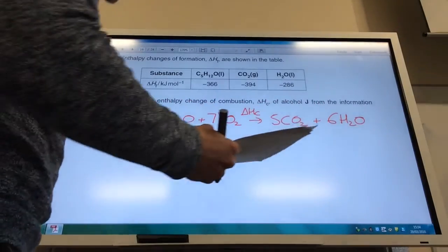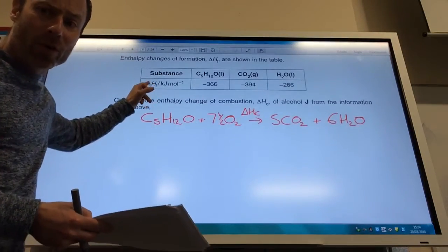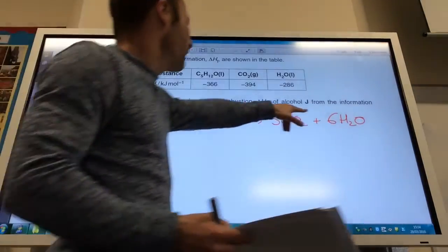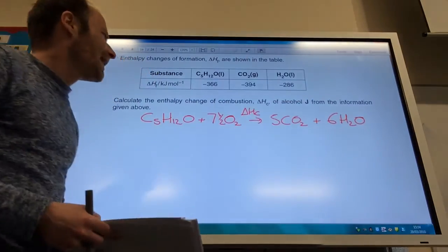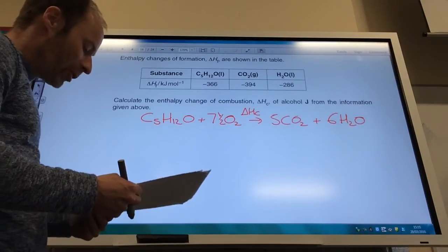Okay, Hess cycle time. So, it's given me formation data. So, if I've got formation data, I've got to find this. I've got to find delta Hc for the C5 alcohol.